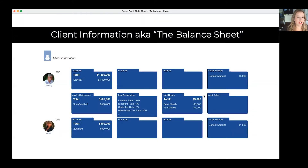I've already gone into our software and entered all of this information. You can see it here on the client information dashboard — think of this like a virtual balance sheet for your clients. You'll see here that John has the 1.5 million and Jane has the half a million, and together they've got half a million of non-qualified.